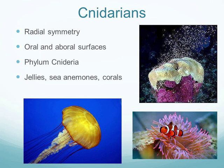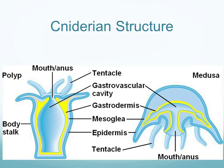The oral surface is where the mouth is. Jellyfish have the oral side facing down and the aboral side facing up. Sea anemones and corals have the mouth facing up and the aboral surface facing down. The phylum is Cnidaria, and the three main groups are jellyfish, sea anemones, and corals.